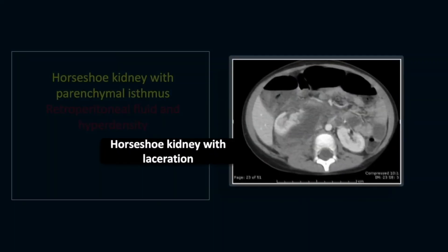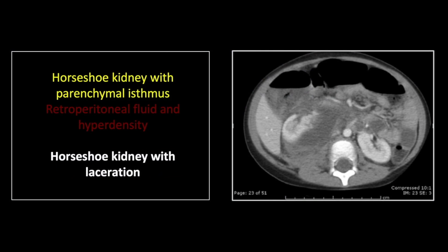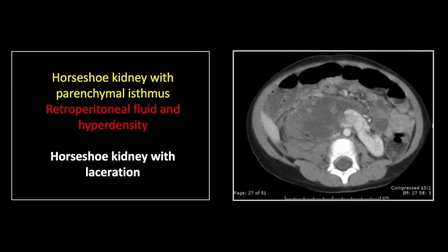Our next case is a horseshoe kidney with laceration of its parenchymal isthmus — the dreaded trauma complication of a horseshoe kidney. You can see the irregular sheared aspect of the inferior right kidney with a large amount of perinephric fluid. On a lower cut, the horseshoe kidney is much more apparent. That left kidney got a greater share of the parenchymal isthmus that you see sheared here. Note the blush of density along that irregular surface — a common finding in sheared parenchymal organs, representing small fragments of parenchyma that maintain their vascular connections, not active extravasation. There is also density consistent with clot formation in this large perinephric fluid collection.